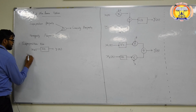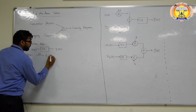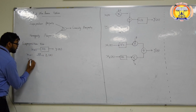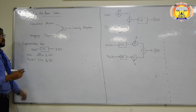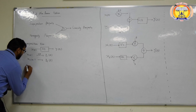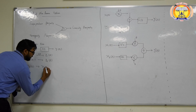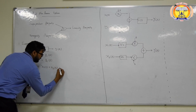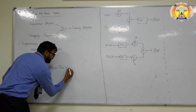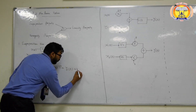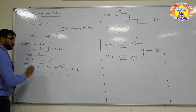If we give input x₁(t), the output is y₁(t), and if we give input x₂(t), we get output y₂(t). Then, according to the superposition theorem, if we apply a third input x₃(t) which is the algebraic sum x₁(t) + x₂(t), then the output of the system is y₁(t) + y₂(t). This is the mathematical expression for the superposition theorem.